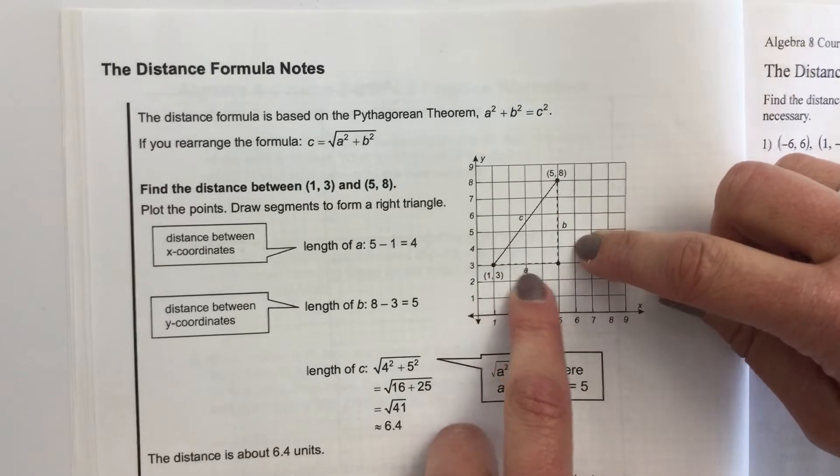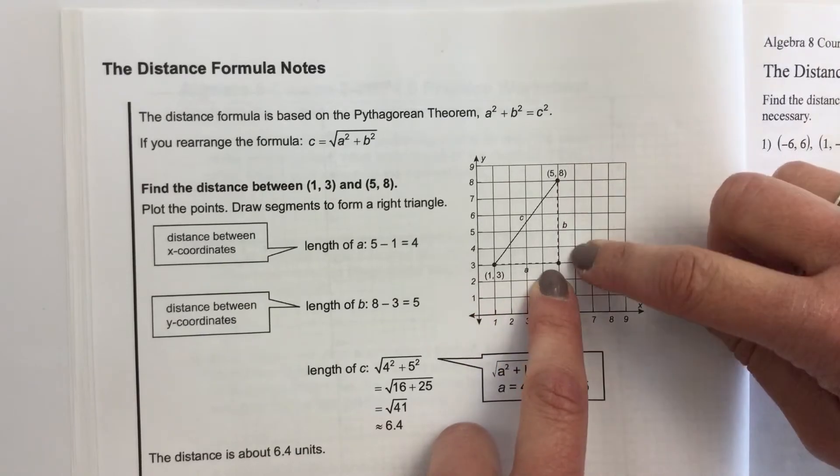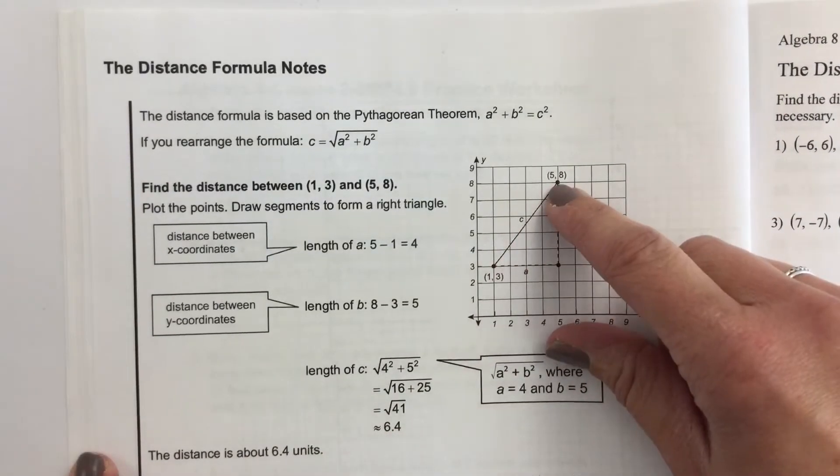You can count how many units are on each side - they form a right triangle. And that way you can find the distance.